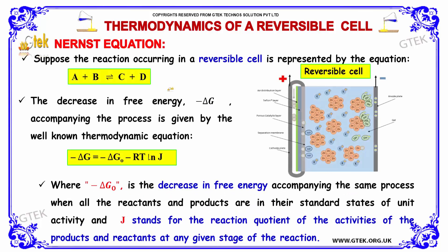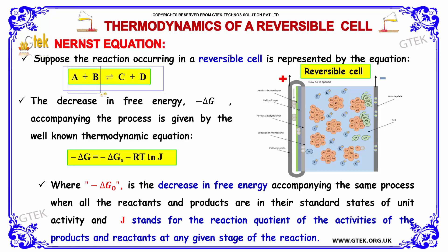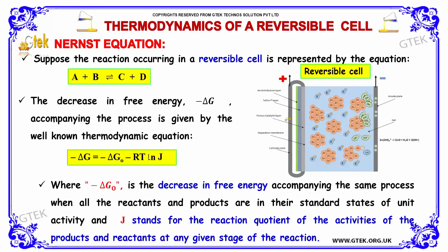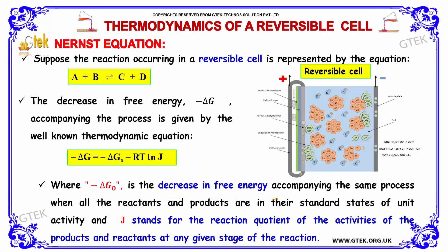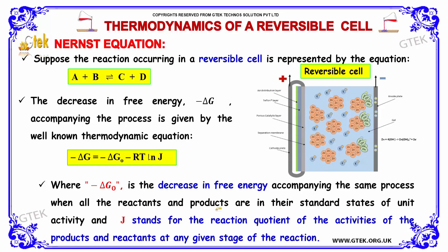First, let's discuss the Nernst equation. Suppose the reaction occurring in a reversible cell is represented by A + B → C + D, where the left side represents reactants and the right side products. The decrease in free energy, denoted as −ΔG, is given by the thermodynamic equation: −ΔG = −ΔG° − RT ln J, where −ΔG° is the decrease in free energy when all reactants and products are in their standard states of unit activity, and J is the reaction quotient of the activities of products and reactants at any given stage of reaction.